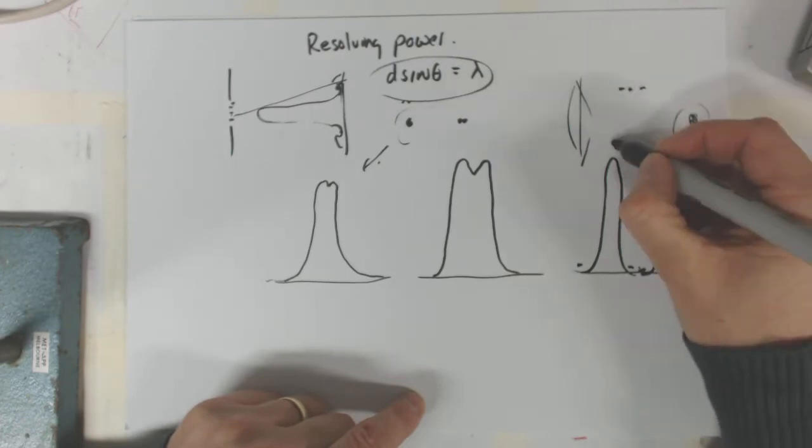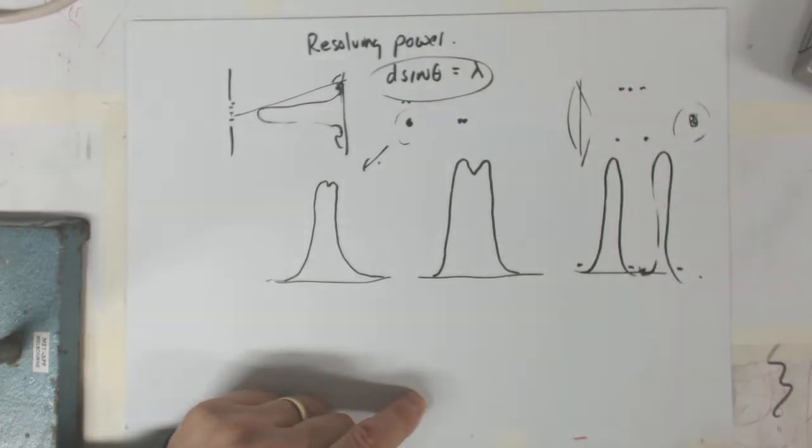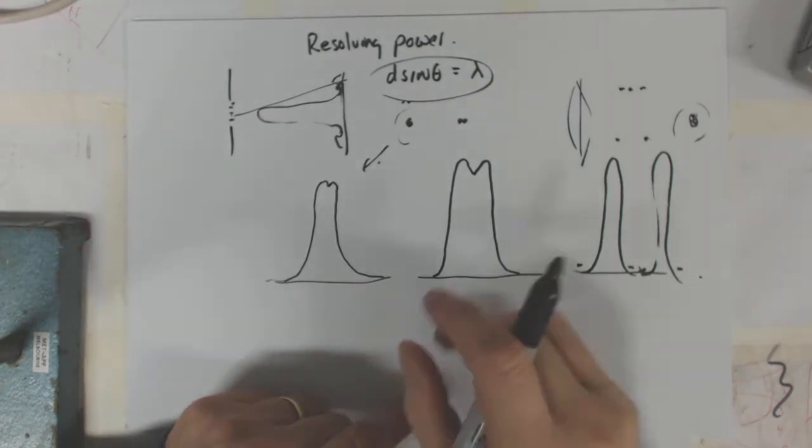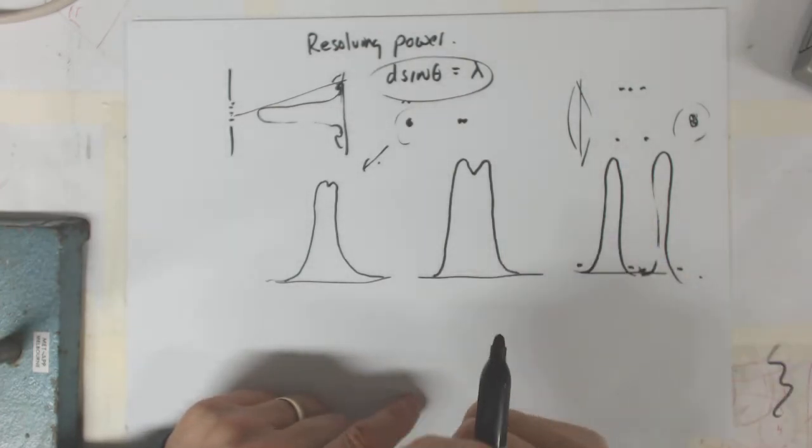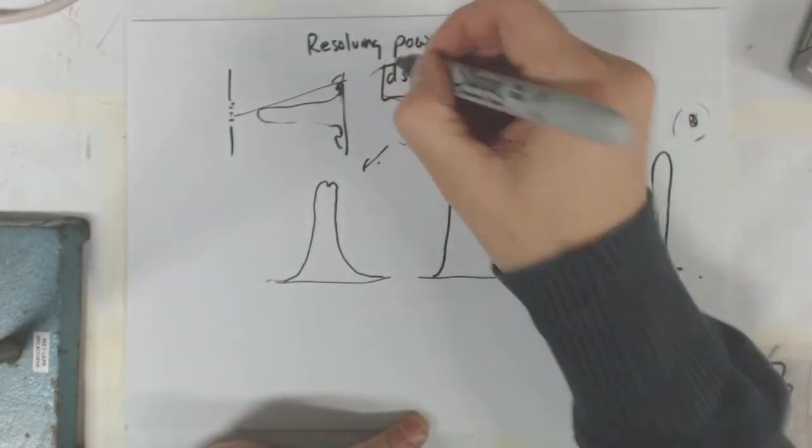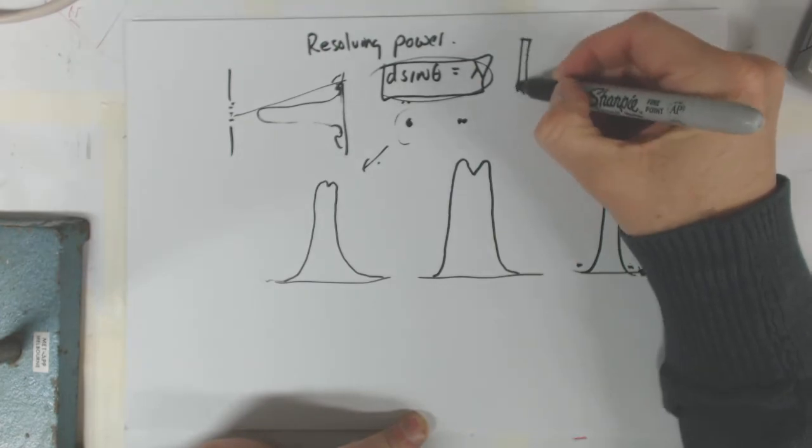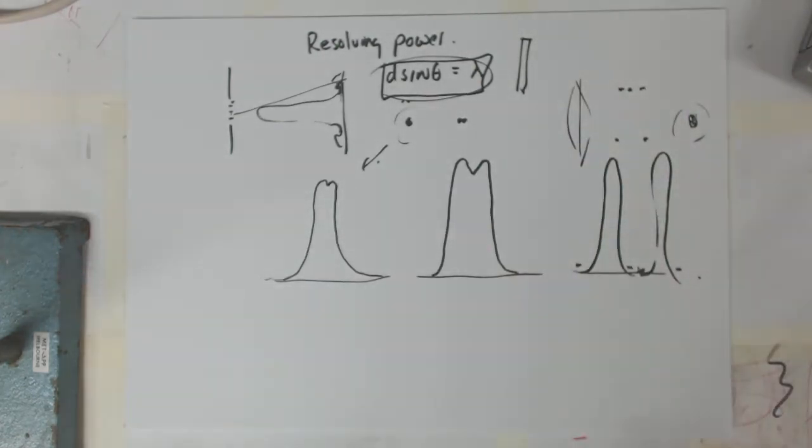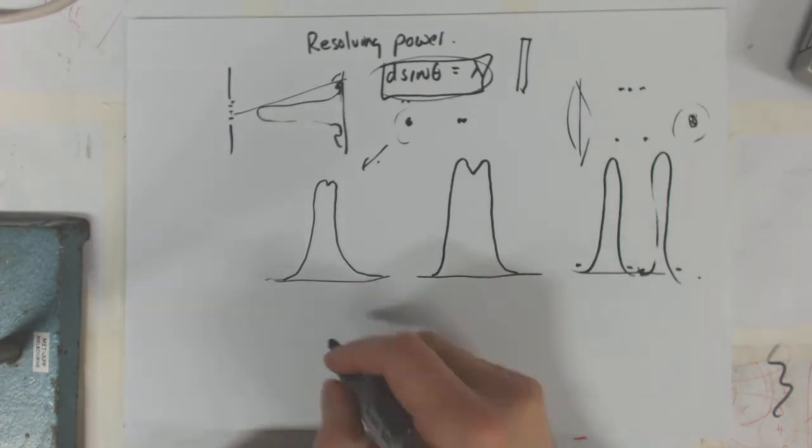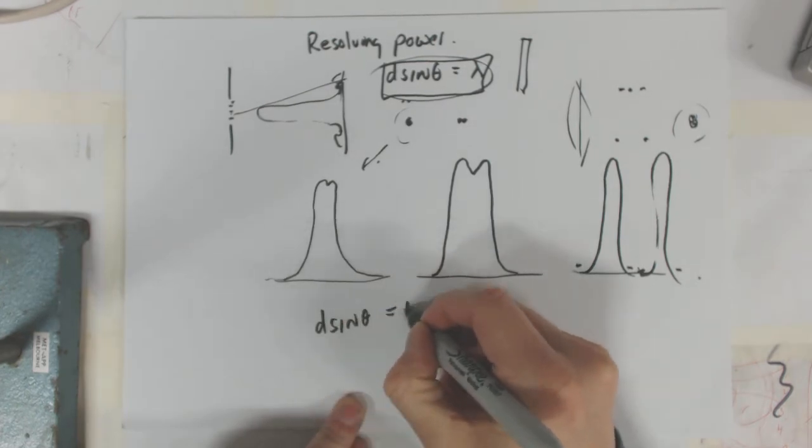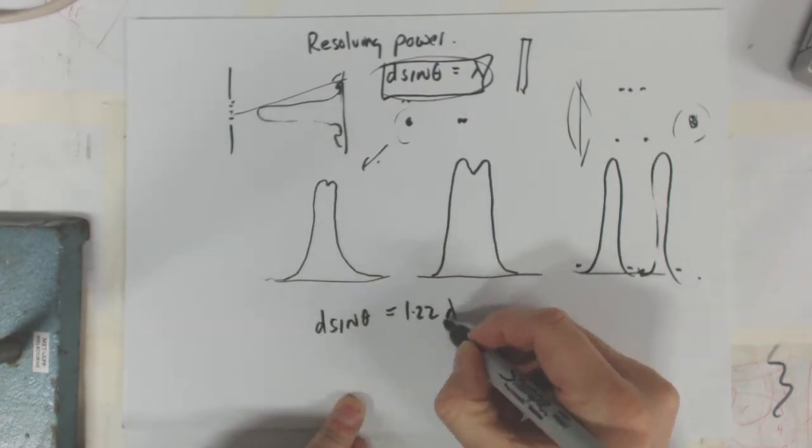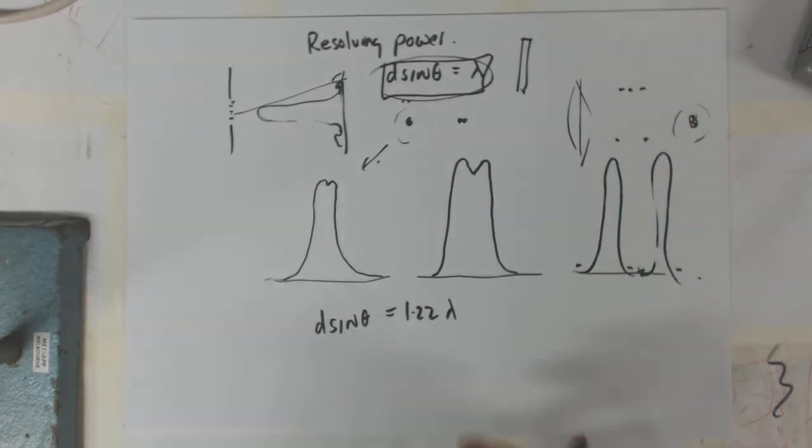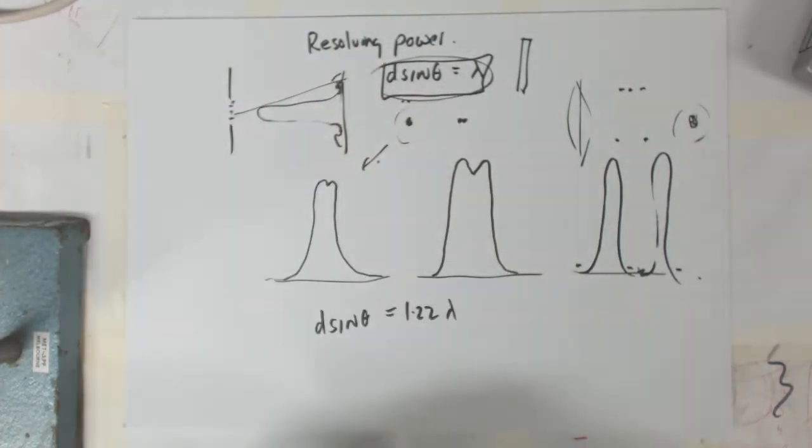then these objects are completely resolved, and that's called your resolving power. Now through a circular gap or lens or something, then the resolving power equation is not this. That was for a slit, a rectangular slit. It's a very similar formula though. The formula actually is, we just bring in this other constant, which says that d sine theta equals 1.22 wavelengths. That's what it works out with a circle, similar sort of proof to what we did with the rectangular slit.